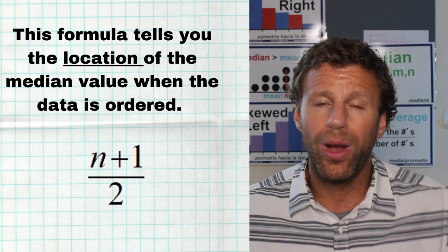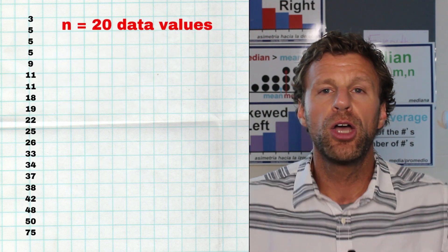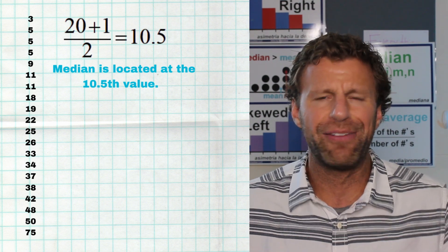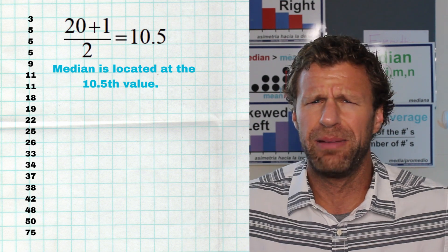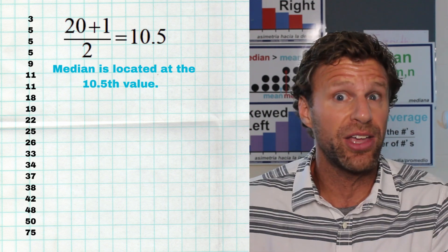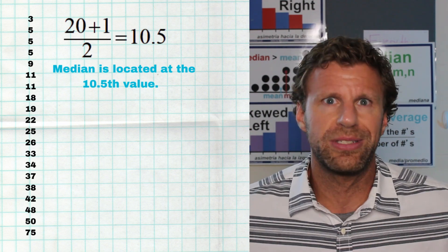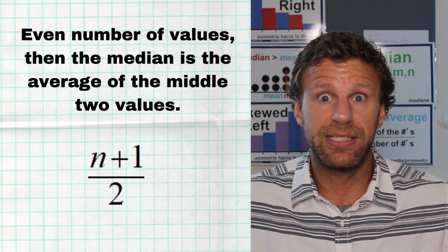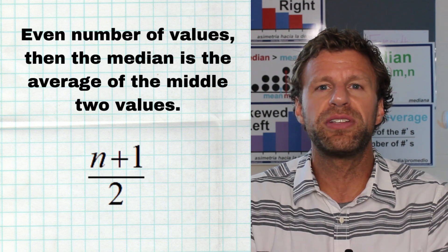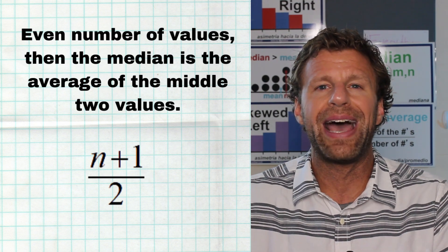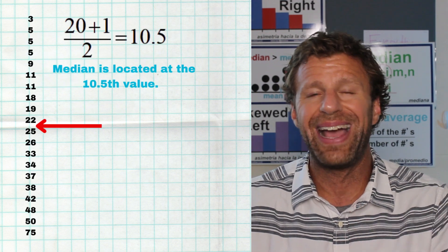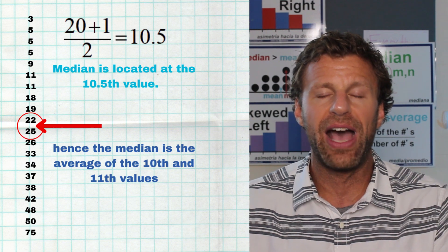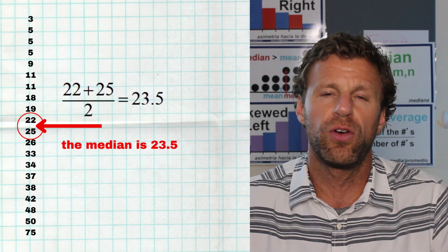For example, if you have 20 pieces of data in a sample, 20 plus one is 21, divided by two is 10.5. You might think there is no 10.5th value — you have a 10th value and an 11th value in order. The data values have to be in order, and there is no 10.5th value. That's exactly the point: it is the center of the data. When you have 20 pieces of data, the center is the value right in between the 10th and the 11th value. So average those middle two values — take the 10th and 11th, add them together and divide by two, and you'll find your median.